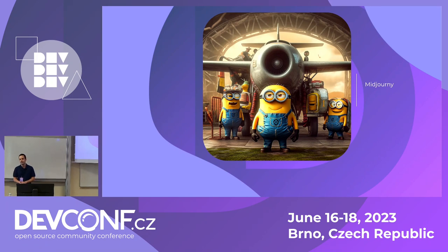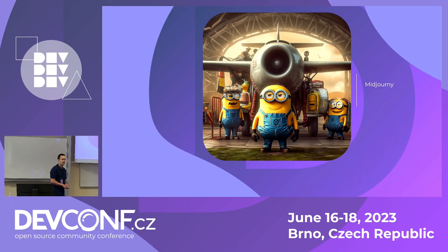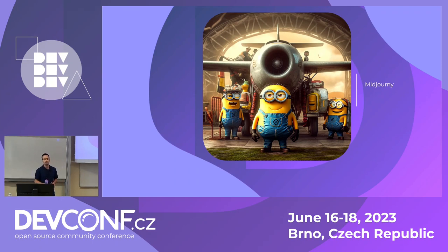In the year 1935, a prototype Boeing B-17 crashed in Ohio, killing two pilots. After that, a group of engineers decided to come up with a new method called the pre-flight checklist to ensure flight safety. This is performed until today before each flight.